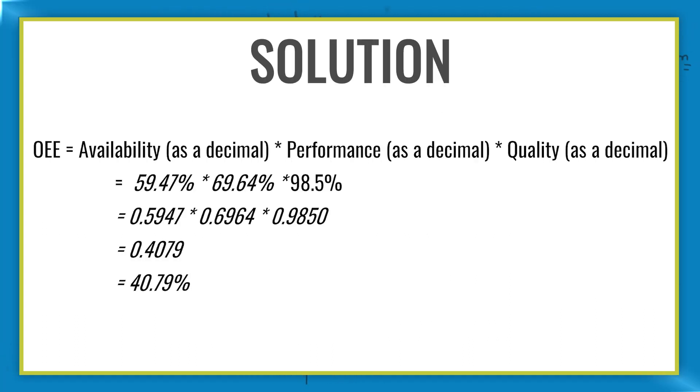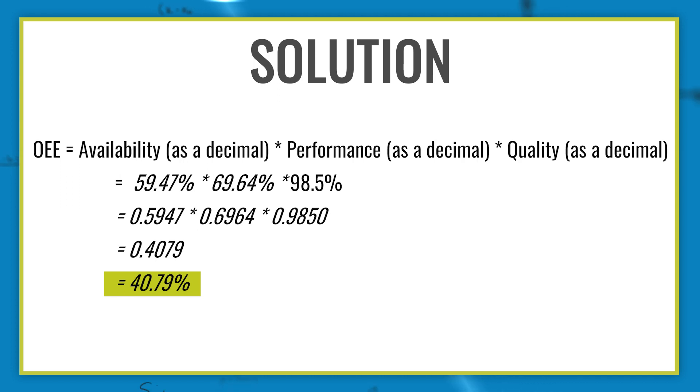If you calculated 40.79%, you're correct. As you can see, the OEE is low for this order, so let's look at how we can improve that.